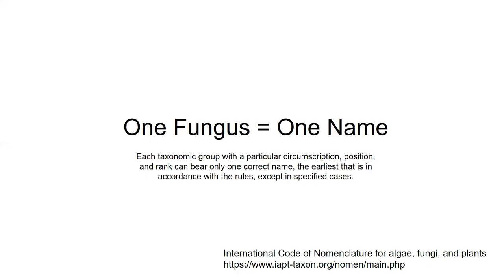Let's start immediately with taxonomy. The International Code of Nomenclature for algae, fungi and plants governs the taxonomy of fungi. In 2011, at the Melbourne Convention, this principle was adopted: one fungus had to have one name. You would think that was obvious, but as mycology evolved over time, fungi are polymorphic — they have multiple forms — and the different forms have been given different names.